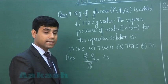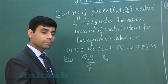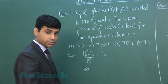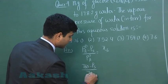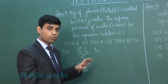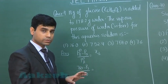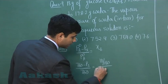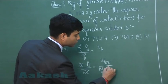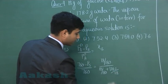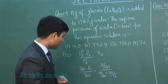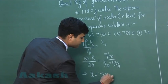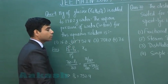P₀A is the vapor pressure of pure solvent, PS is the vapor pressure of solution, and χB represents the mole fraction of solute. P₀A for water is 760 torr. So (P₀A − PS) / P₀A = χB, where χB equals moles of solute divided by total moles of solution. We have 18 grams of glucose, so moles of solute = 18/180, and moles of solvent = 178.2/18, where 18 is the molar mass of water. Solving this equation, the value of PS comes out to 752.4 torr. The correct answer is option number 2, which is 752.4 torr.